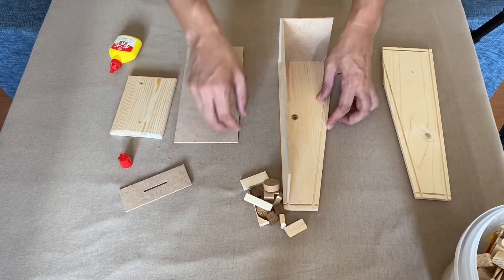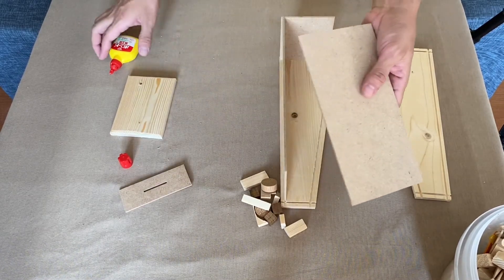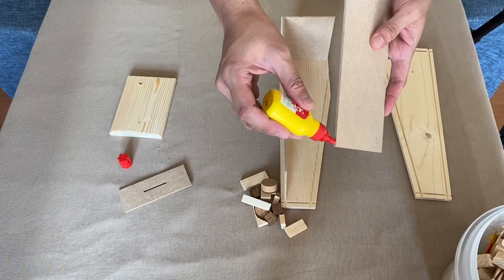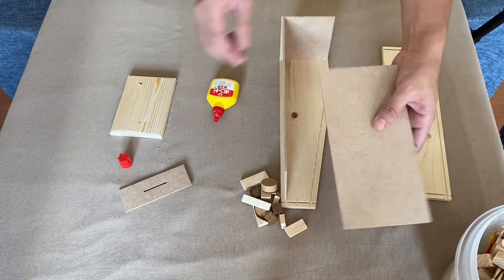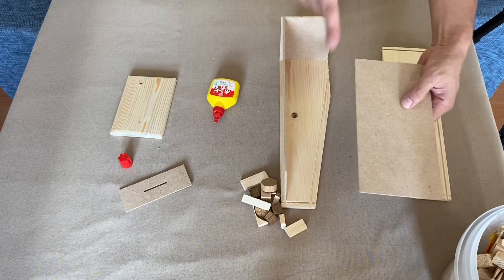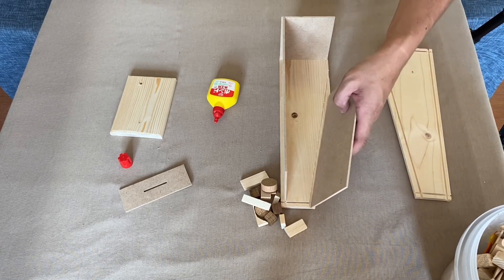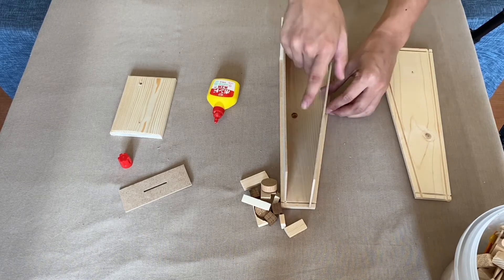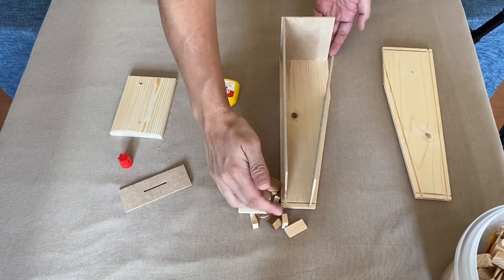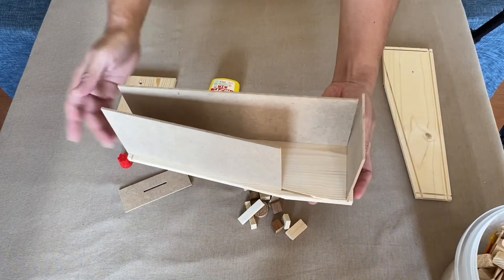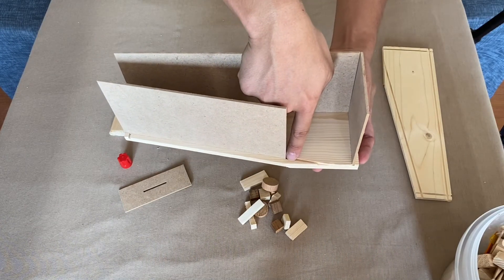And next one, pick up the middle size board and glue on the side. And this one start from here, top side, like this. And some space on the bottom side.